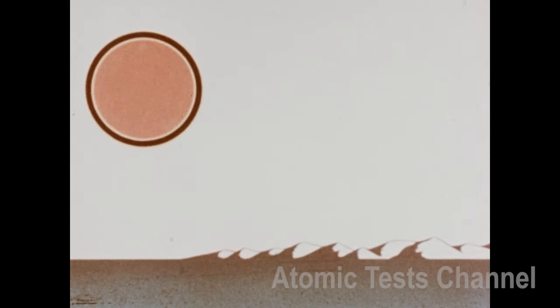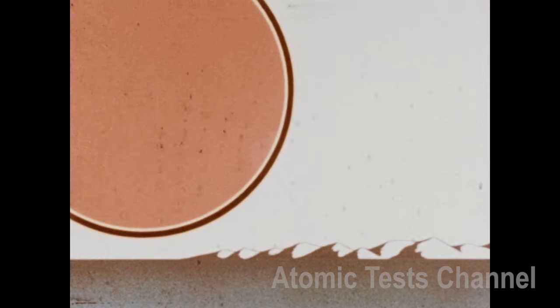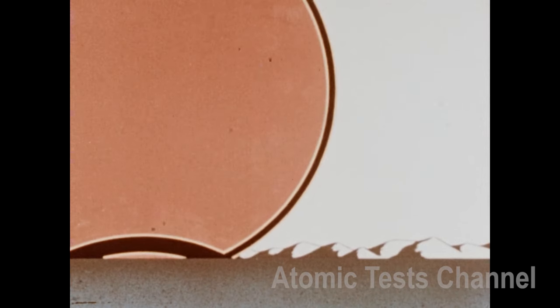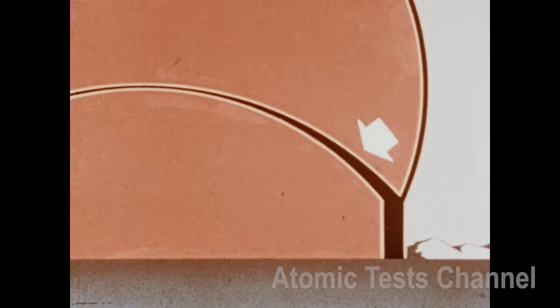The blast or shock wave is caused by the sudden compression and release of air surrounding the expanding fireball. Its pounds per square inch pressure depends upon the yield of the weapon. Moreover, any shock wave may be reinforced by its reflection from the Earth's surface. The reflected wave catches up with the initial wave and gives it an extra punch.